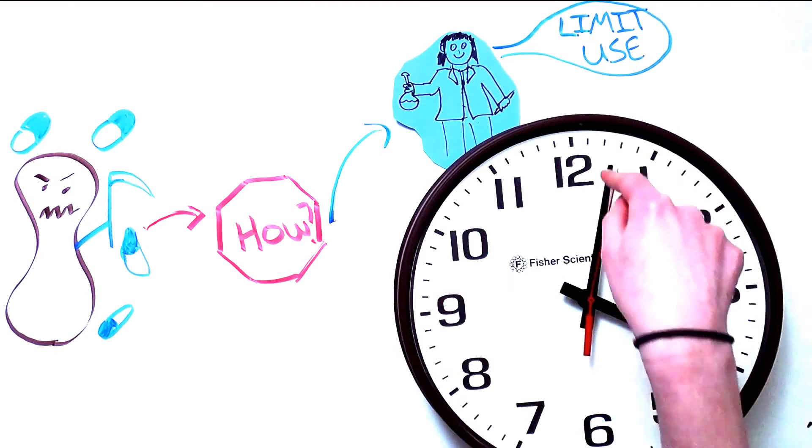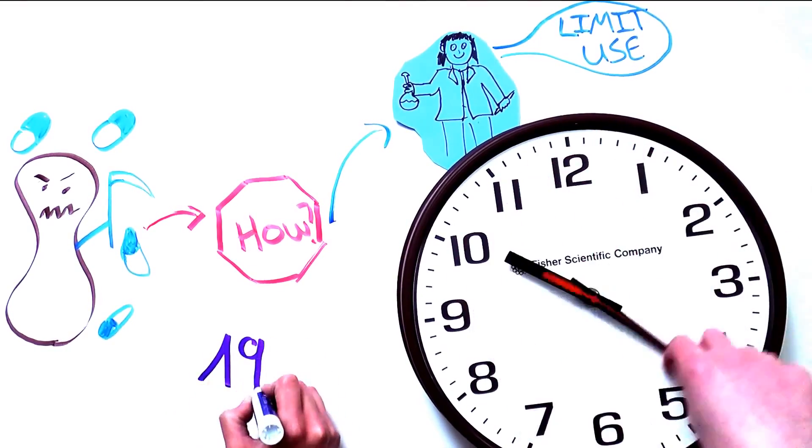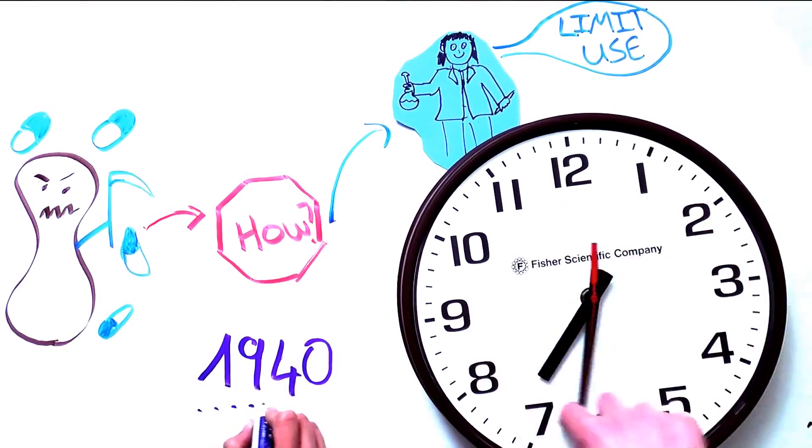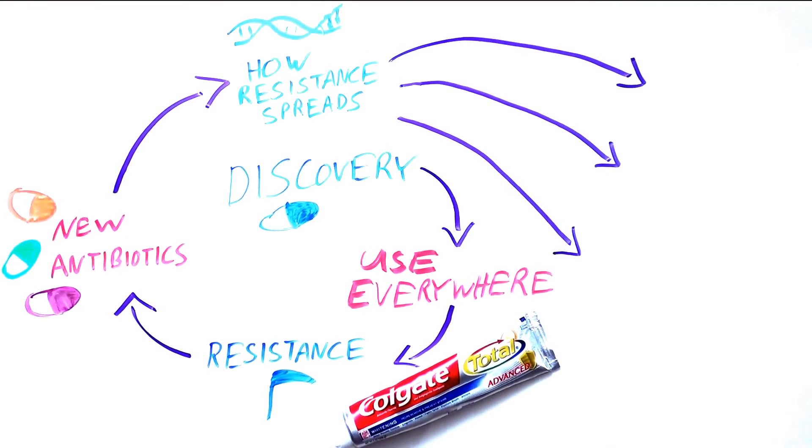If something isn't done, we risk turning the clock back to the pre-antibiotic era when simple infections could kill you. But what to do? There are several possible solutions, informed by what we have learned so far about the science of antibiotic resistance.